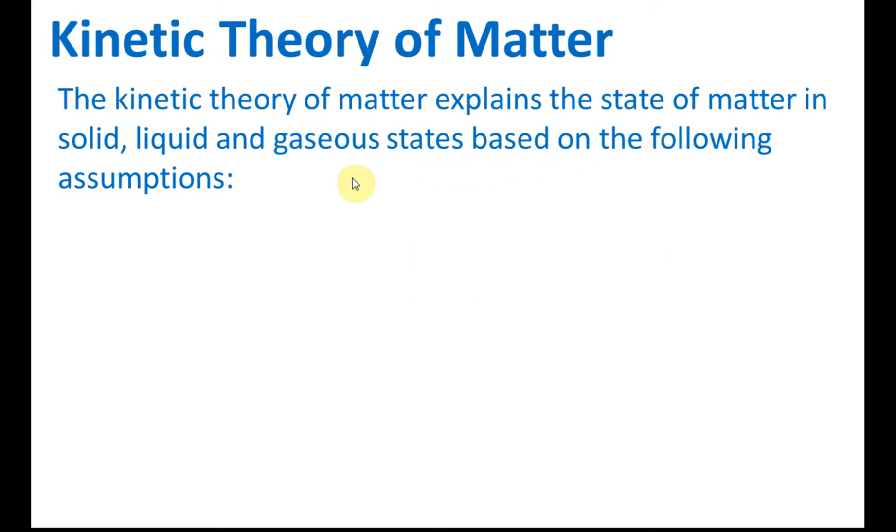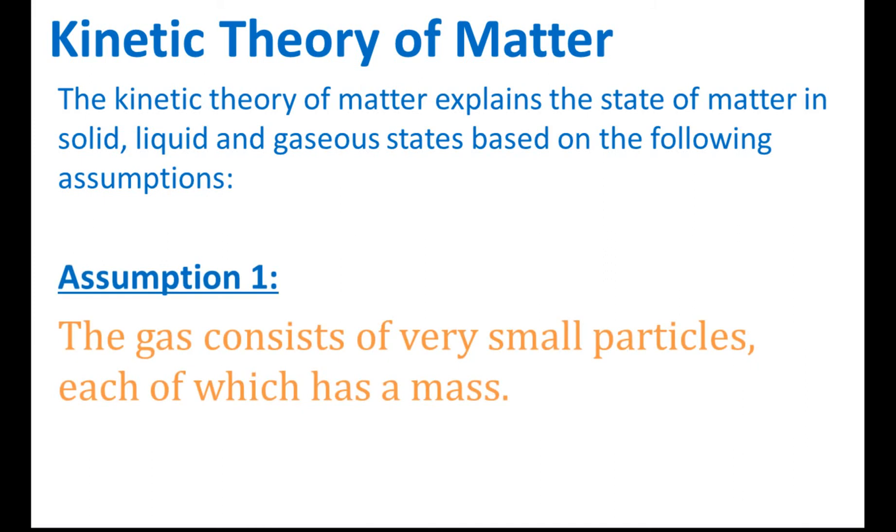There are three states of matter and the substance can change from one state to another state. This can be explained by using kinetic theories of matter and there are a few assumptions in kinetic theories of matter. The first one: the gas consists of very small particles, each of which has a mass.